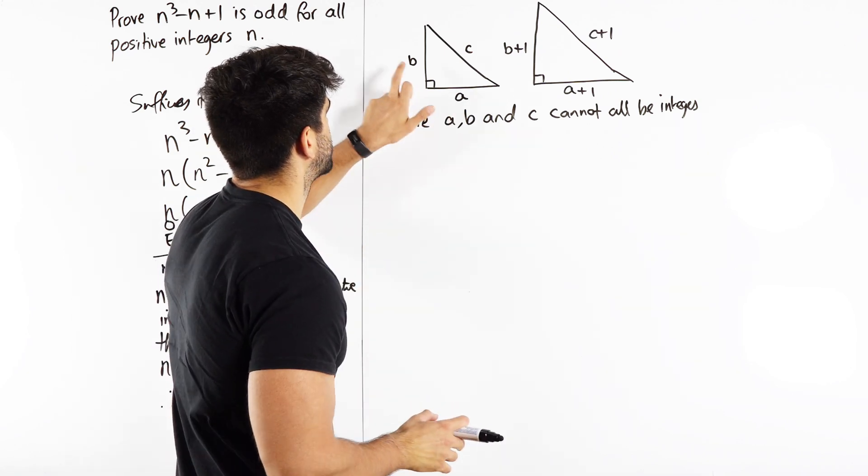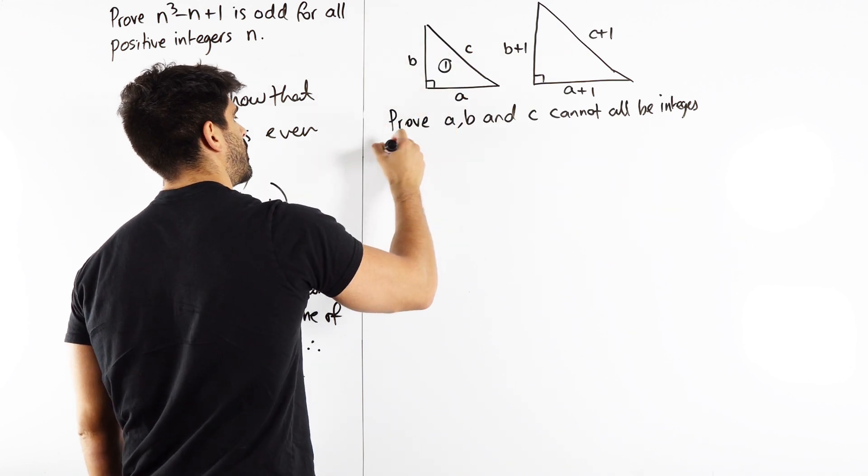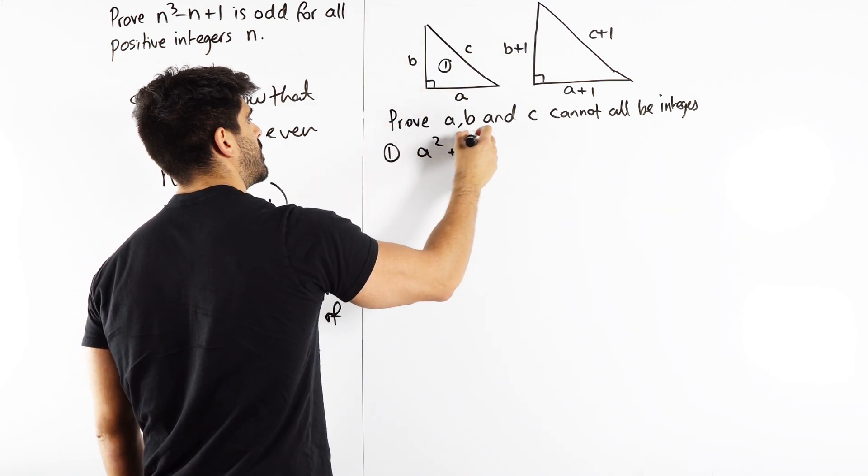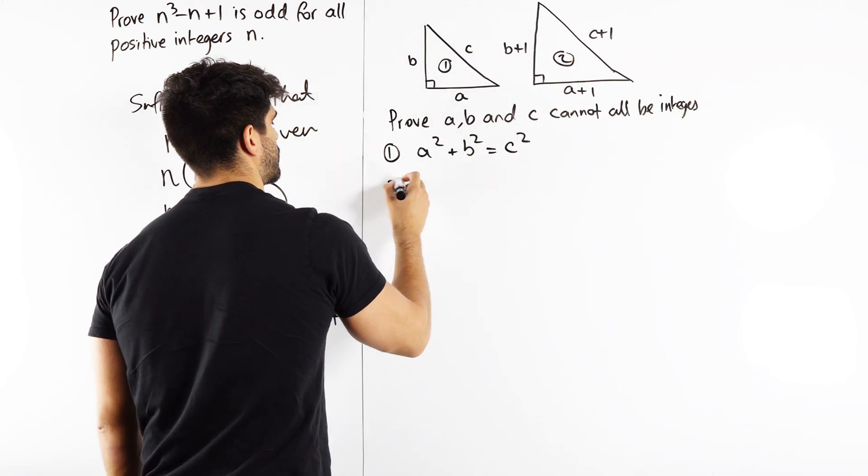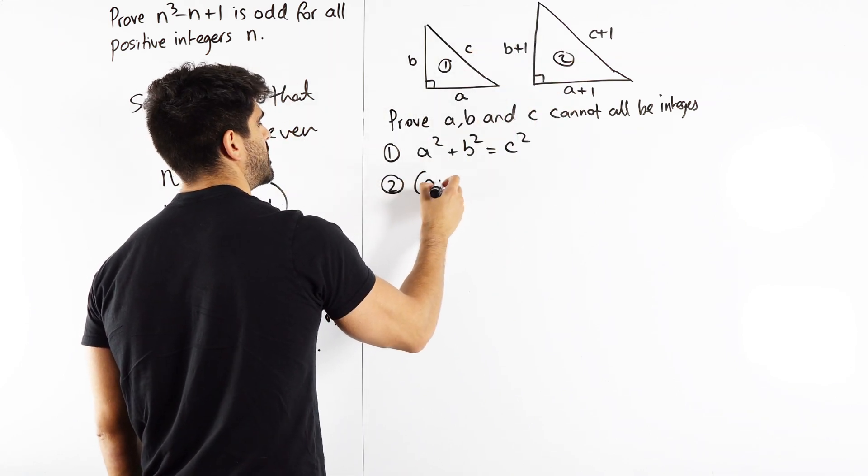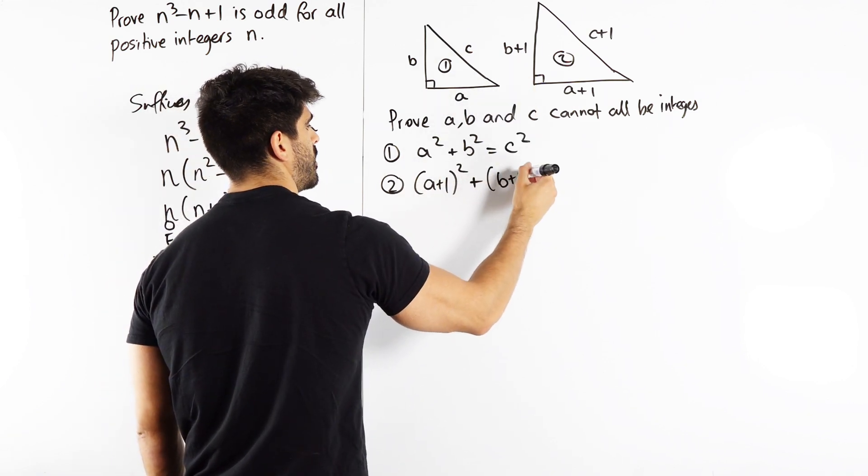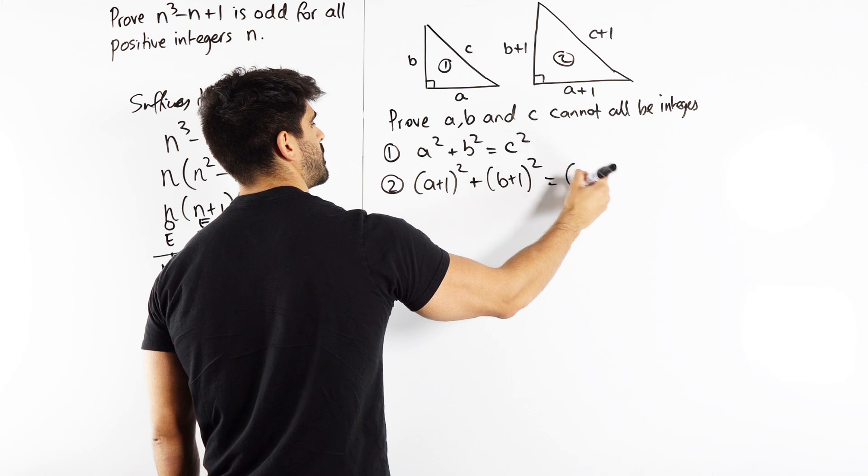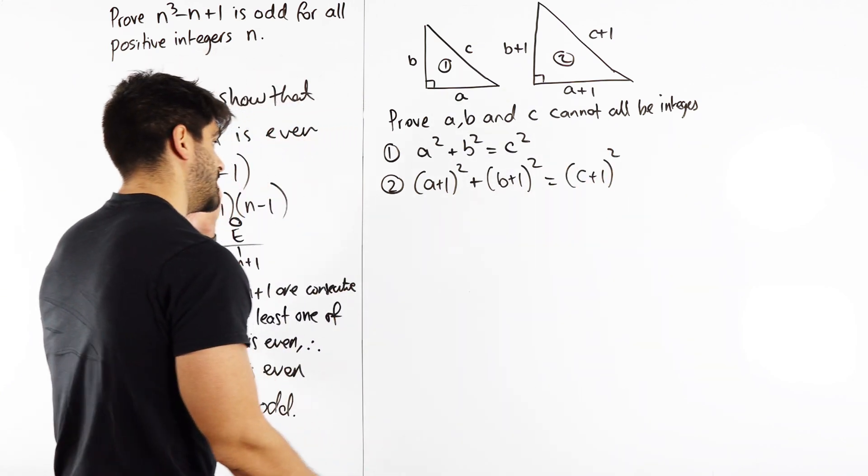So A² + B² = C². So for triangle one, A² + B² = C². And we do the same for triangle two. (A + 1)². Now here guys, you have to be careful. We need to use brackets. (B + 1)² = (C + 1)².